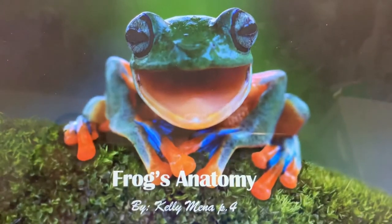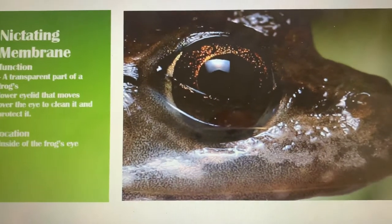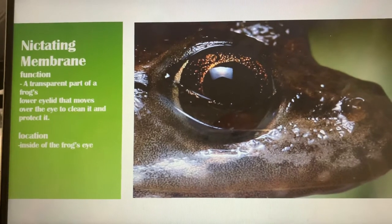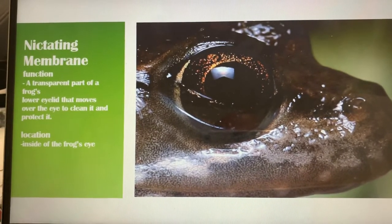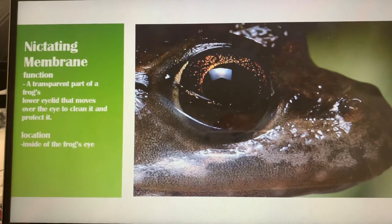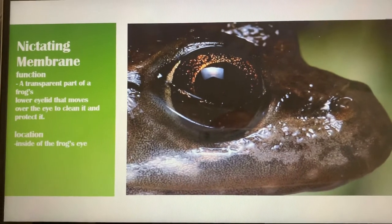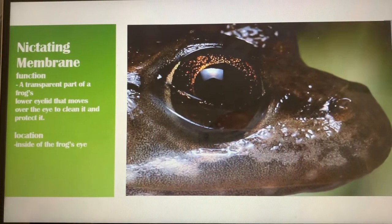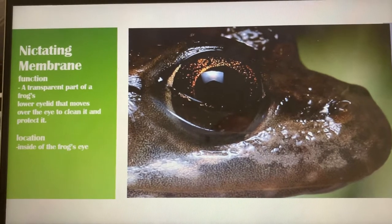The first one is the nictitating membrane. The nictitating membrane is a transparent part of a frog's lower eyelid that moves over the eye to clean it and protect it. The location of the nictitating membrane is inside the frog's eye.